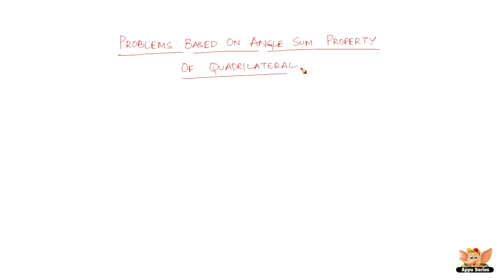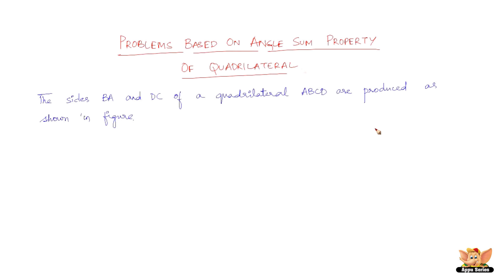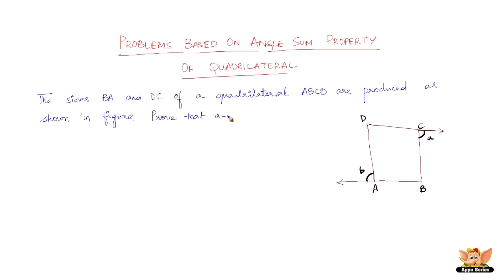Let us solve problems based on the angle sum property of a quadrilateral. The question here is: the sides BA and DC of a quadrilateral ABCD are produced as shown in the figure. We need to prove that A plus B equals X plus Y.